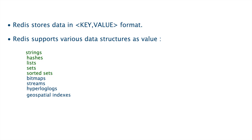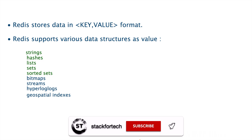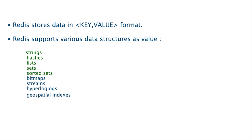Redis actually provides various data structure supports. The value of data can be strings, hashes, lists, sets, or sorted sets, and there are multiple additional data structures supported such as bitmaps, streams, HyperLogLogs, and geospatial indexes. This is how Redis provides a wide variety of data types to be used in your application.